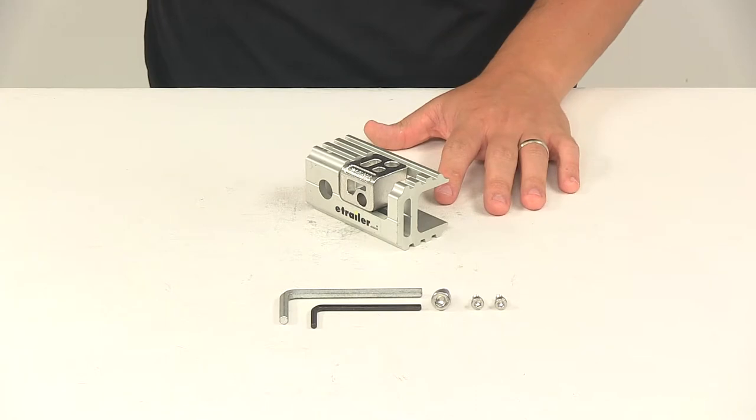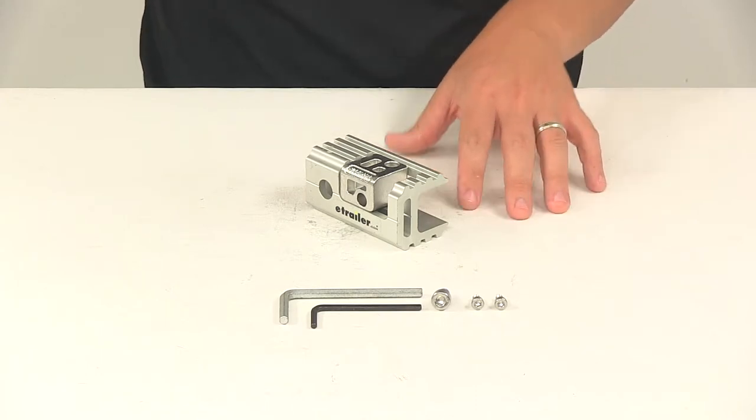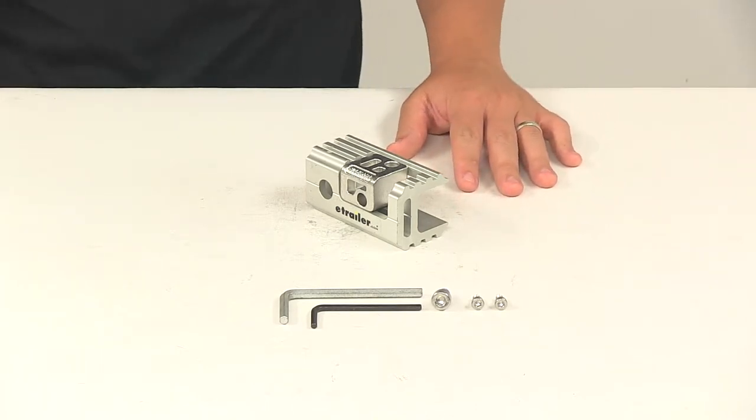Now when it comes to the Yakima Ridgeback bike racks, it's going to fit model numbers Y02-458, Y02-457, or Y02-459.